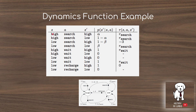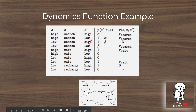Looking at the table, the first entry — being in the high state and taking the search action — corresponds to a path in the MDP illustration. We're in a high battery charge state and decide to search for trash. We receive a reward in both cases, but there's a probability of one minus alpha of transitioning from high to low battery charge, or staying in the high state with probability alpha.